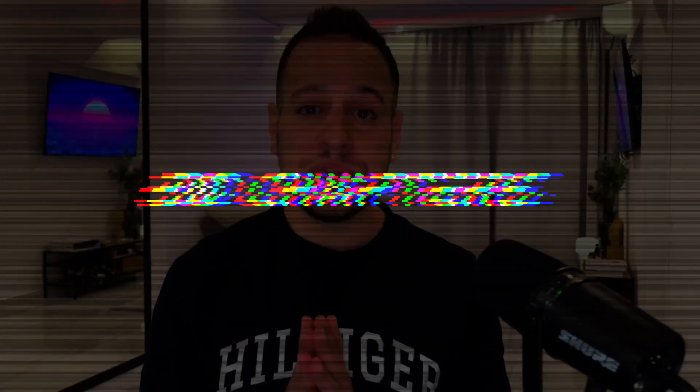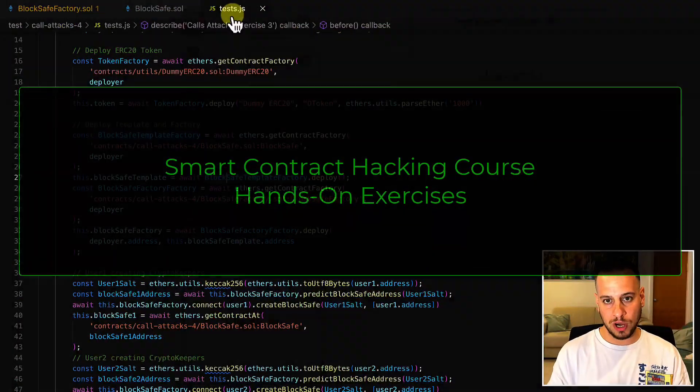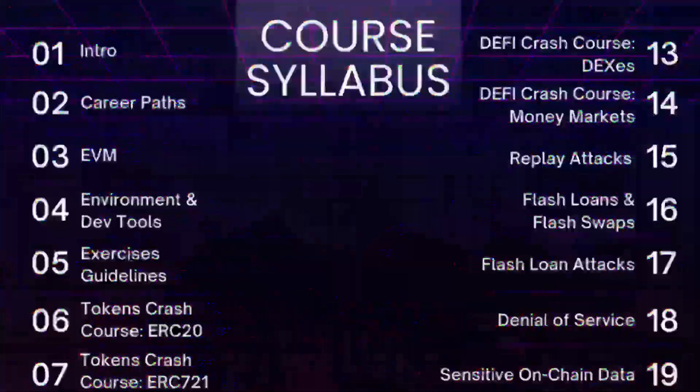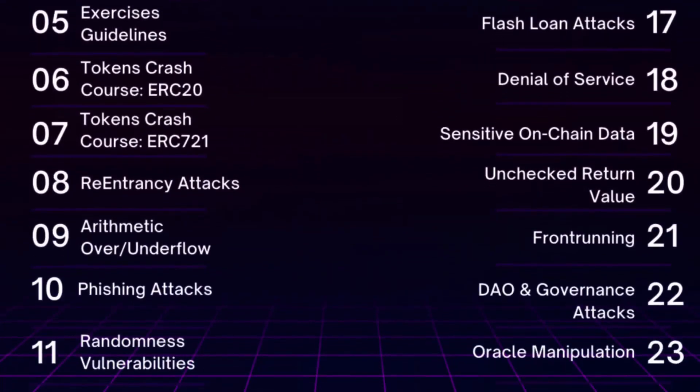With more than 30 chapters and 50 hands-on exercises built on real-world scenarios, you will get a structured approach to learning and mastering smart contract hacking. You will learn concepts from beginner-friendly level to advanced, as taught by top auditors in the industry. By completing the course and becoming proficient in subjects like flash loans, DAO and governance attacks, and oracle manipulation, you will be able to identify and create POCs of critical security flaws in smart contracts.